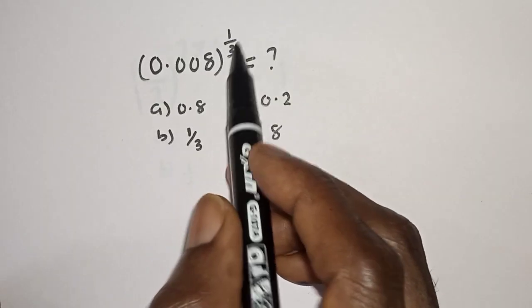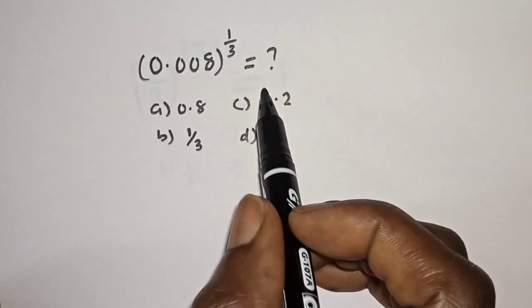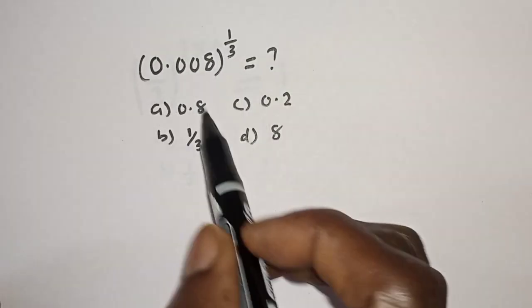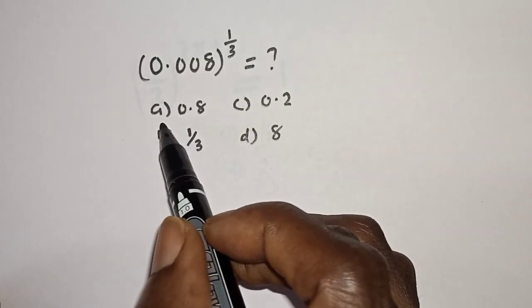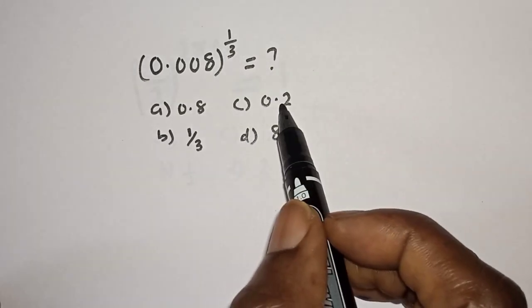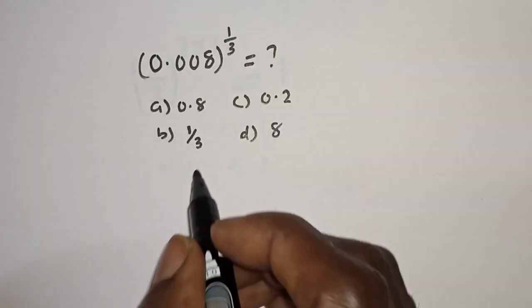The problem is 0.008 to the power of 1 over 3 is equal to what? Hi everyone, welcome to my class. In this class I want to evaluate this nice math problem. But before we proceed, please don't forget to like, share, comment, and subscribe. Here are the options given: a is equal to 0.8, b is equal to 1 over 3, c is equal to 0.2, and d is equal to 8. Let's see what the answer will look like.